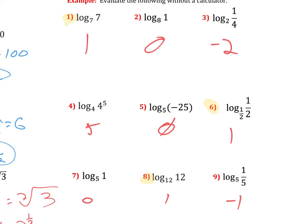The reason why is any time the base and the argument match, so 7, 7, 12, 12, half, half, it's always going to be a 1 because you're basically asking 7 to what power is 7? 1, half to what power is 1 half? 12 to what power is 12? Well, that's just 7 to the first power, or 12 to the first power.